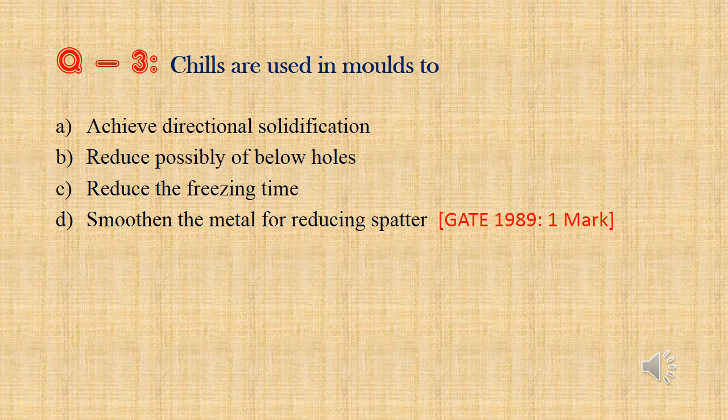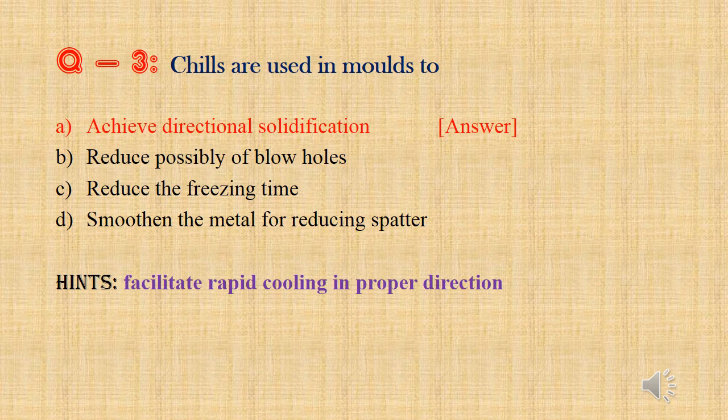Question 3: Chills are used in mold to — Option A: Achieve directional solidification. Option B: Reduce possibility of blow holes. Option C: Reduce the freezing time. Option D: Smoothen the metal for reducing spatter. Chills are used at particular places of the mold to make them solidify quickly, so it supports solidification to happen in one direction. Although chills also reduce the freezing time, chills are not placed at all places — only at some particular places to achieve solidification in a certain direction. So the main purpose is to achieve directional solidification. Answer is Option A.